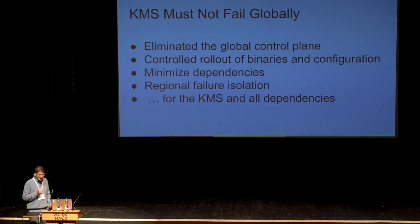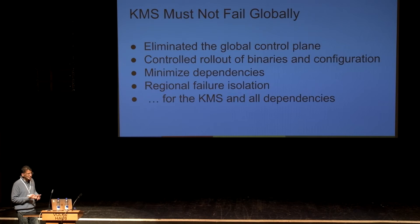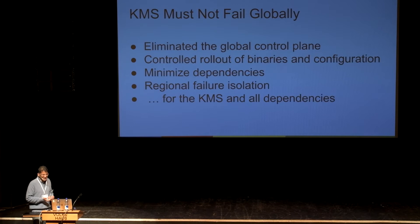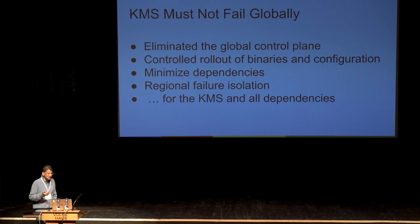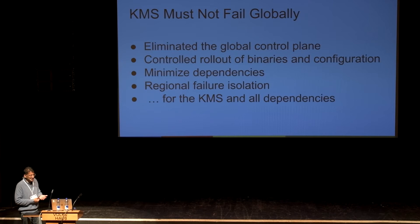To achieve this, we ended up making a bunch of changes. We eliminated the global control plane. We changed how we roll out binaries and configurations — we no longer make changes globally in under 15 minutes; it now takes at least a week before we roll things out, gradually using the usual 1, 5, 10, 50% ratios. We've also minimized dependencies and deferred aggressively against our dependencies not being available. And to deal with traffic shifts at scale, we implemented regional isolation so that one region being overloaded does not cause cascading failures into other regions.